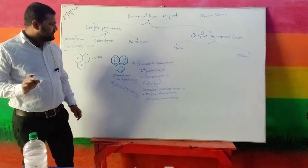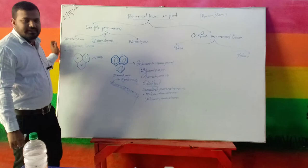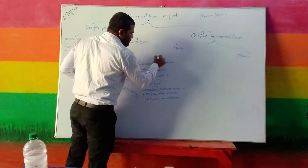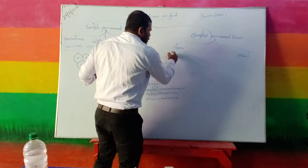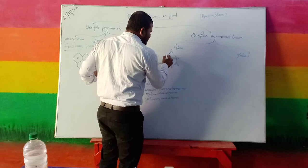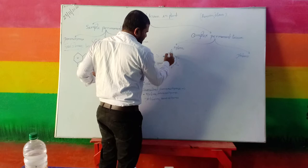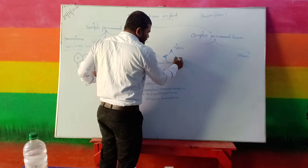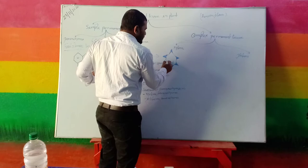Next is collenchyma — the second simple permanent tissue. When the parenchyma cell stores materials only in the corner part of the cell, some intracellular changes take place and it converts into a new tissue known as collenchyma tissue.